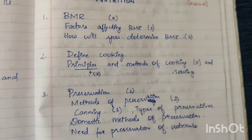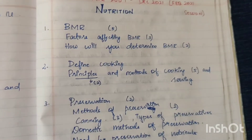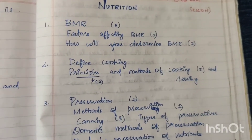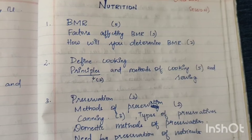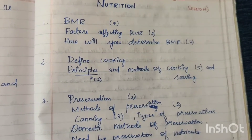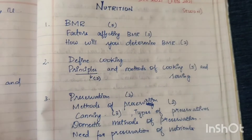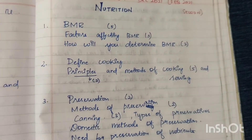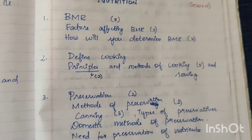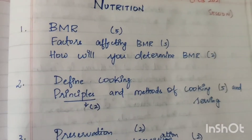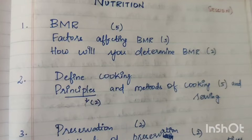First question: BMR — Basal Metabolic Rate. This question has appeared 5 times. Looking at the subtopics: factors affecting BMR, 5 times, either in 5 marks or 15 marks. How will you determine BMR? — 2 times. If you study the 15 marks answer, it will be very easy.